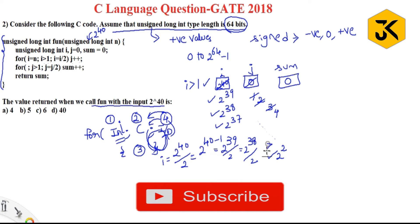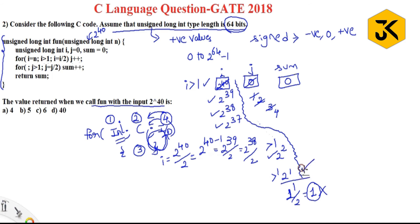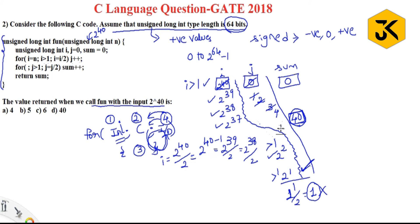The process continues all the way down: 2^2 is greater than 1, then 2^1 is greater than 1, then 2^1 divided by 2 is 1 — the condition fails. So starting from 2^40, 2^39, 2^38 ... down to 2^1, the condition is true 40 times. So j is incremented 40 times and j equals 40.